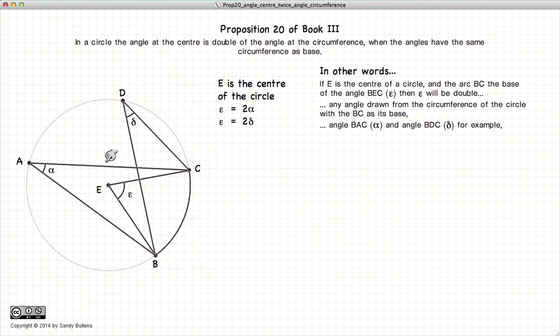if we have E, the center of this circle, and we create an angle BEC, then any angle drawn from the circumference of the circle that shares the base BC will be half of the angle at the center.